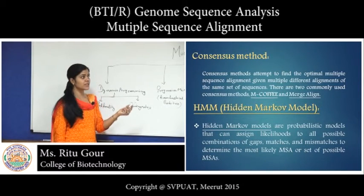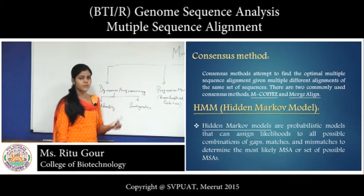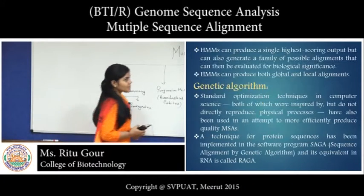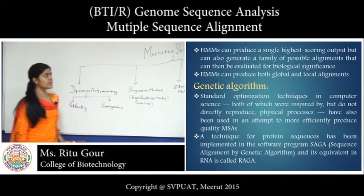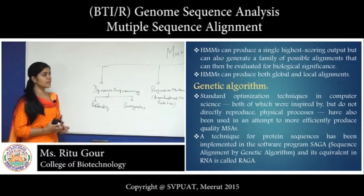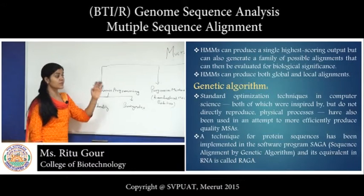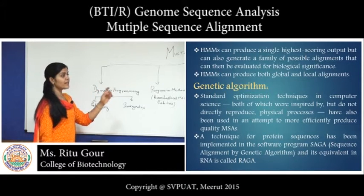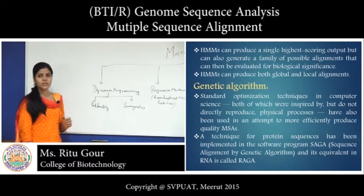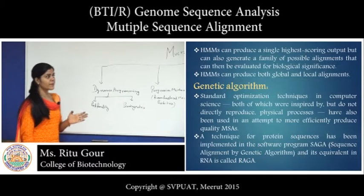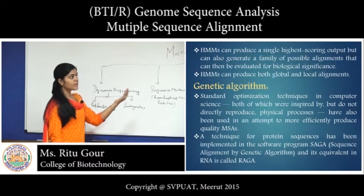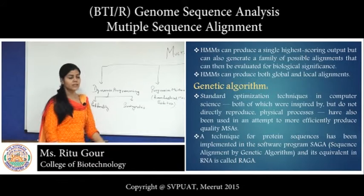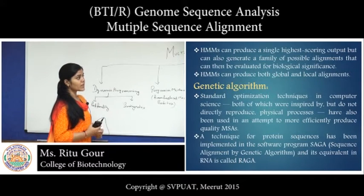With the help of consensus method, we can find out more than two or three results from a single alignment. Next is genetic algorithm — it is one of the best methods of multiple sequence alignment because it provides the most accurate result of MSA. It is a very complex and expensive method, but it is required for genome sequence analysis.